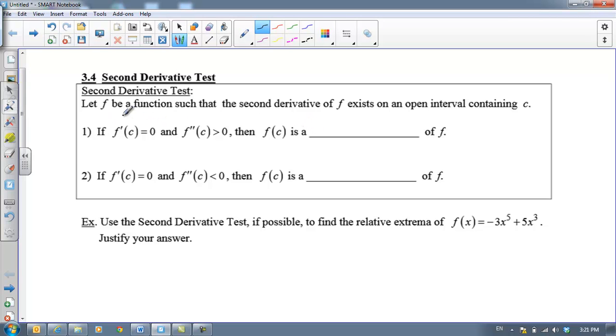If f prime equals zero, we have a critical point, and f double prime is greater than zero, that means we are concave up. Then that creates a relative minimum for the graph of f and that should make sense. If you have a flat spot and the graph is concave up there, you're going to get a relative minimum.